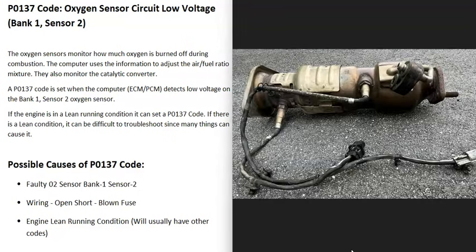There are oxygen sensors located down on the exhaust that do two things. First, they monitor how much oxygen was burnt off during combustion, and the computer uses that information to adjust the air-fuel ratio mixture going into the cylinders. Second, they monitor the catalytic converter.